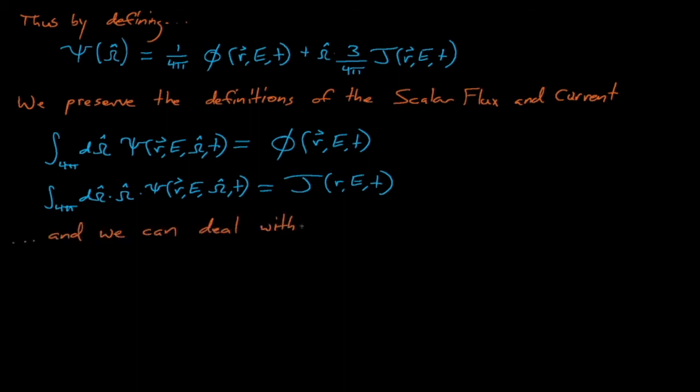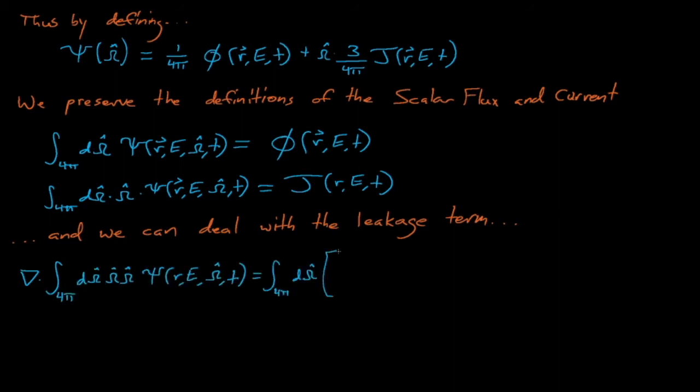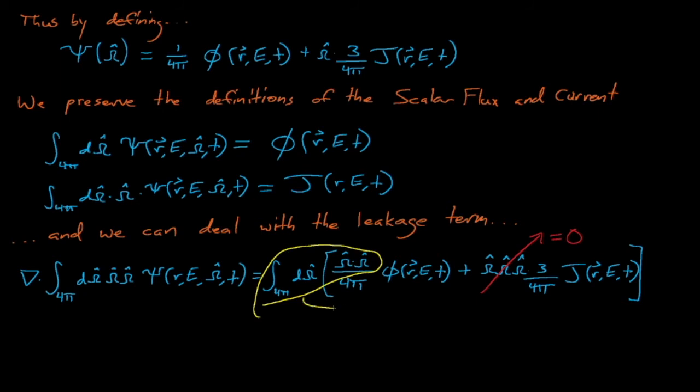We can also take the second moment of this definition for the angular flux to solve for that pesky second-order leakage term that appeared in our first moment P1 equation. When we do this, we see that the term simply equals one-third times the gradient of the scalar flux. So by assuming that the angular flux is only linearly anisotropic, we have found a way to solve for this second-order leakage term and have reduced our P1 equations into two equations with two unknowns. Now we can solve them.